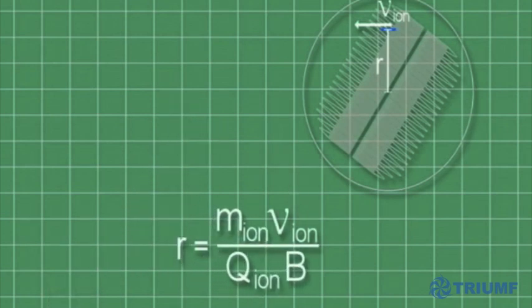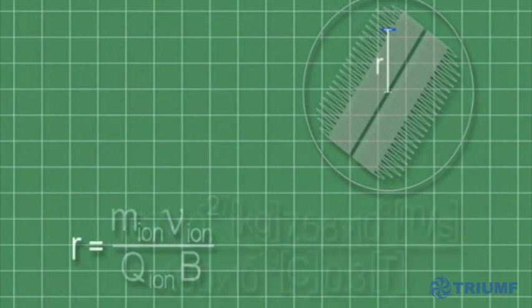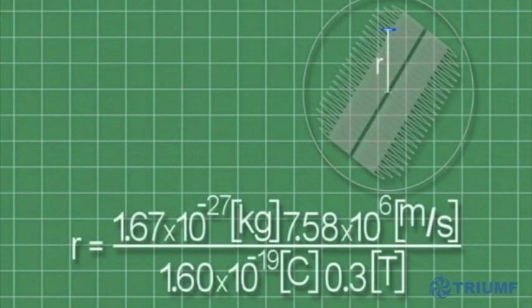Rearranging the formulas, we can solve for the orbital radius. Substituting in the known values for the ion's mass, velocity, and charge, and the value of the magnetic field, we can determine the orbital radius.